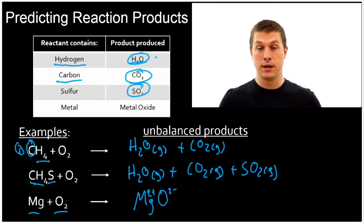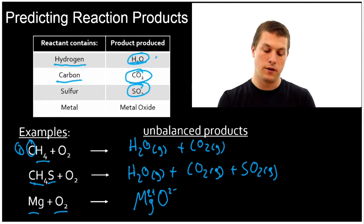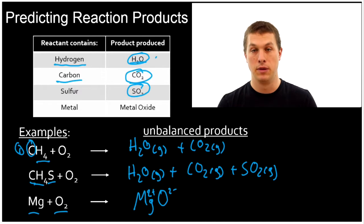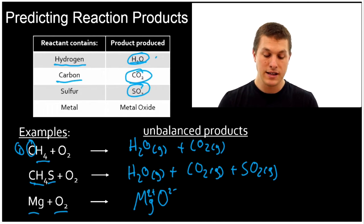Okay, so all we do in a combustion reaction is combine things with oxygen. And that gives us a different set of products. Unfortunately, with this chart, you basically just have to memorize it. But there's really only 4 products, so it's not too bad.